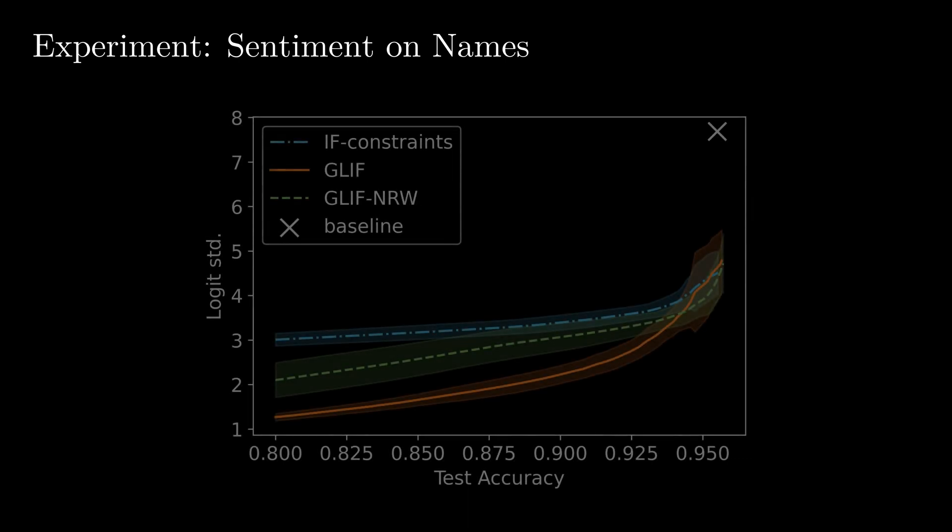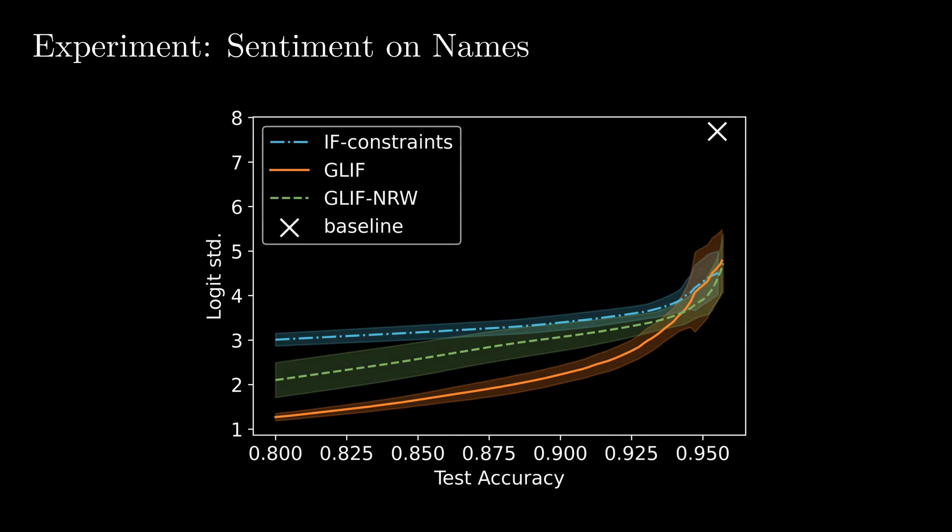In this first plot, we display the trade-off between individual fairness and test accuracy. We measure the individual fairness via the standard deviation of scores, which should be as small as possible, as the scores for all names should be neutral. We can observe that the baseline is very unfair, and that all methods can significantly improve upon the baseline, even without losing accuracy. Additionally, we see that the local IF methods glyph and glyph NRW achieve a much better fairness accuracy trade-off than the global IF constraints method.